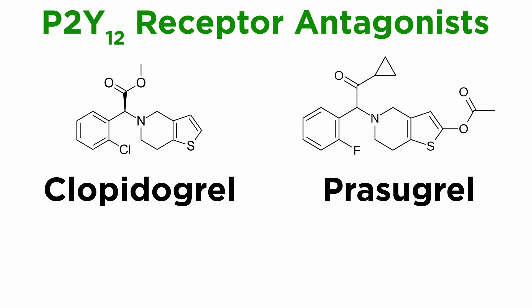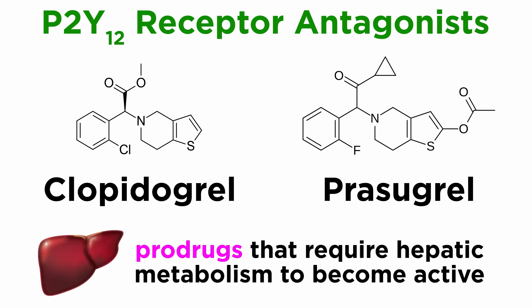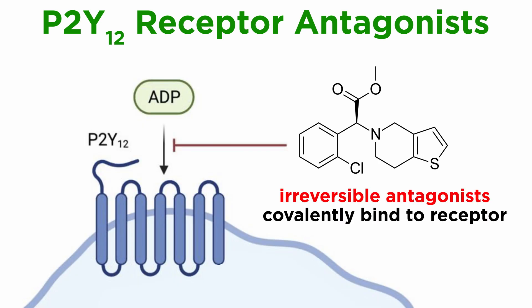P2Y12 antagonists such as clopidogrel and prasugrel are pro-drugs requiring hepatic metabolism to form an active metabolite, and are irreversible antagonists. This means that they covalently bind to the binding site that ADP usually occupies, thereby blocking its function.